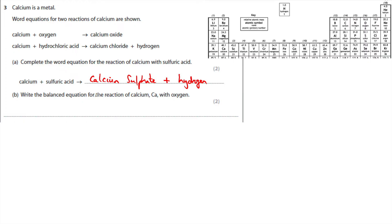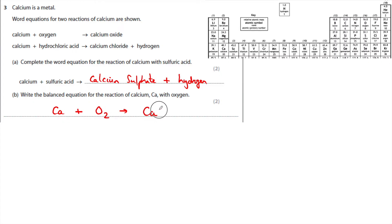Write a balanced equation for the reaction of calcium with oxygen. First, calcium as a metal element reacts with oxygen as a molecule to produce calcium oxide. Calcium is in group two so it forms a 2+ ion; oxygen is in group six so it forms a 2- ion — so CaO is the right formula. Now to balance it: we've got two oxygens, so we multiply by two on each side, giving 2Ca + O₂ → 2CaO.